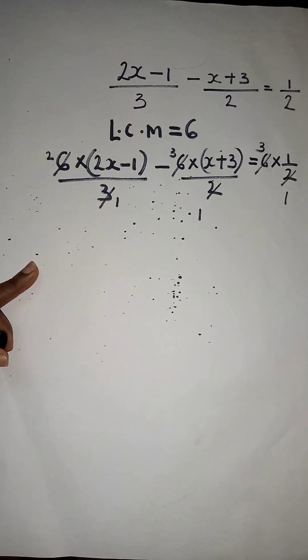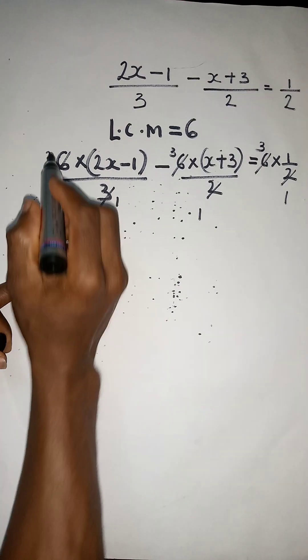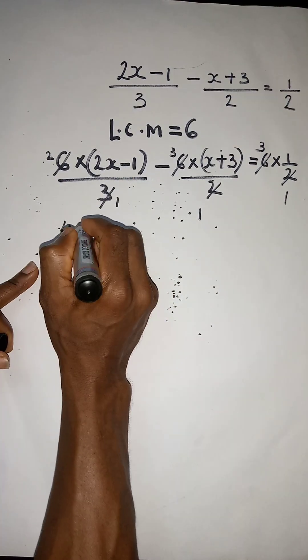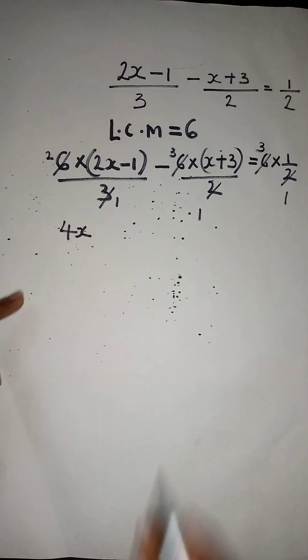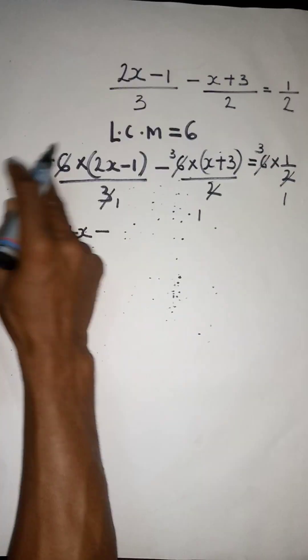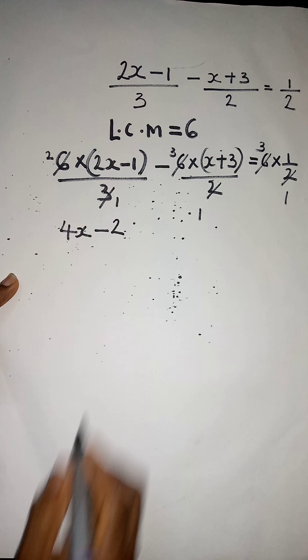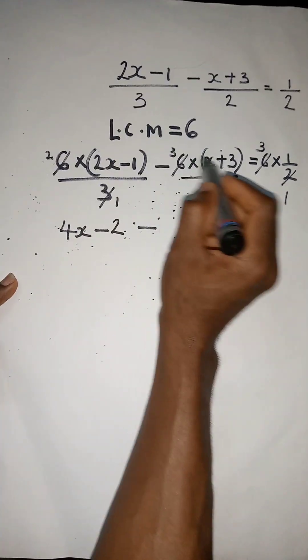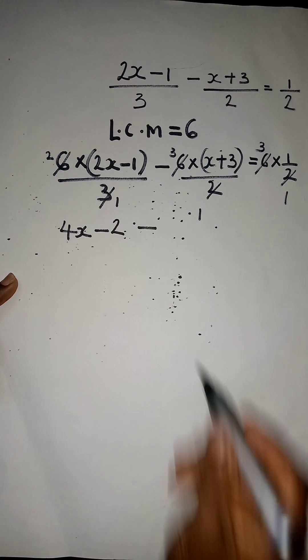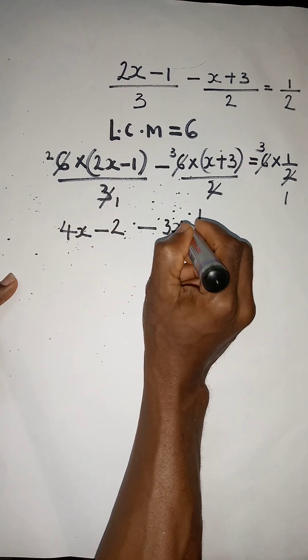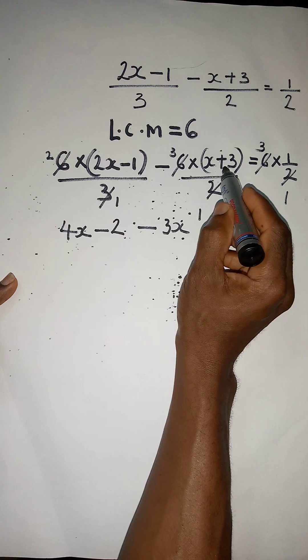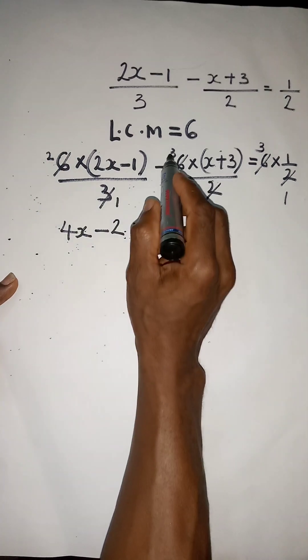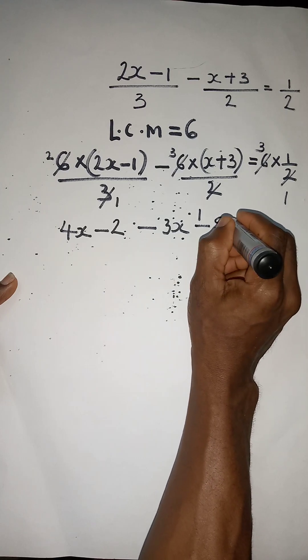So let's quickly open the brackets. We have 2 times 2x, we have 4x, minus 2 times 1, we have 2, minus 3 times x, we have 3x. Minus times plus we have minus, so we have here minus 3 times 3, 9.